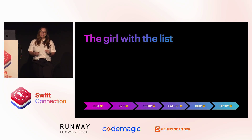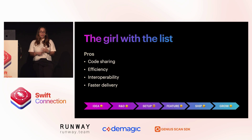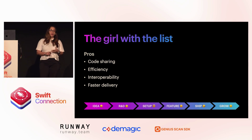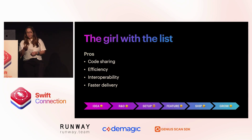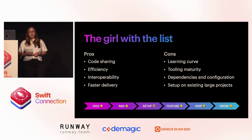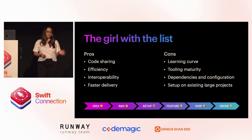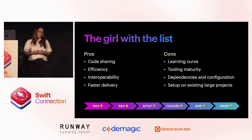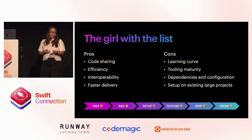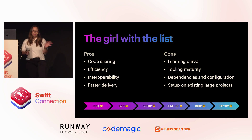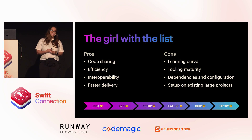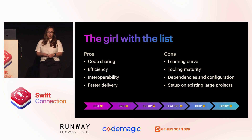The pros: we were code sharing, very efficient in our work, had interoperability so we could communicate code between platforms, and we were delivering faster. On the downside, there was a learning curve — we needed to learn Kotlin, and they needed to learn some Swift. The tooling maturity is not quite there yet, though JetBrains is working hard to make it easier for Swift developers. Dependencies and configuration was a very delicate balance. And the setup on existing large projects is hell.